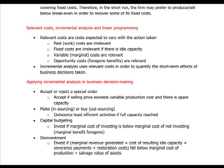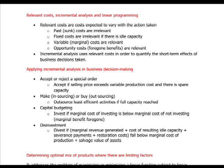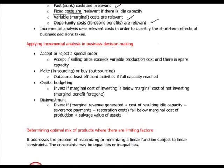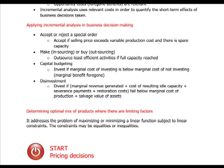In the context of relevant cost, incremental analysis, and linear programming: relevant costs are expected to vary with the action taken, so they are a result of our decision. Past costs are irrelevant because they don't change as a result of the decision. If there is idle capacity, fixed costs are irrelevant. Variable or marginal costs are relevant because they are incremental to the decision. Opportunity costs — the foregone benefits of alternatives given up — are also relevant.